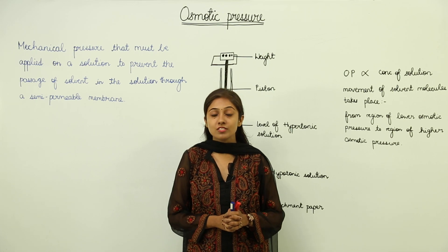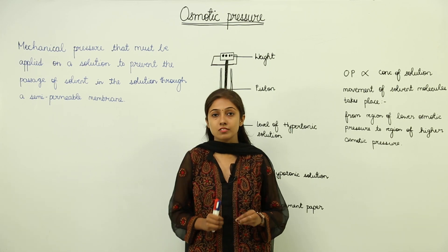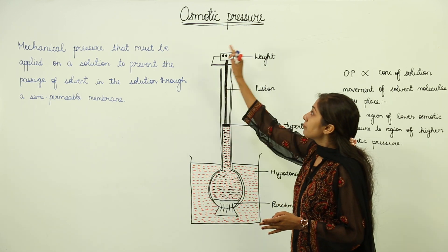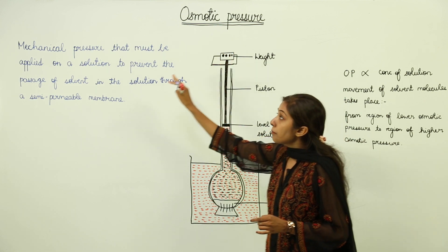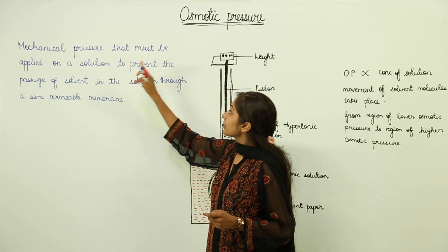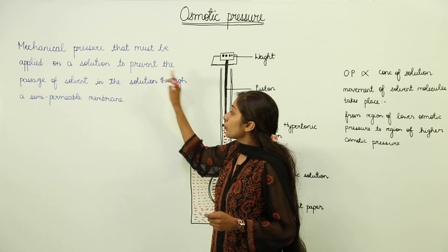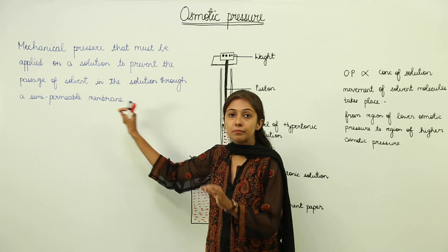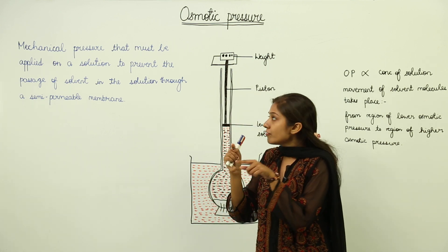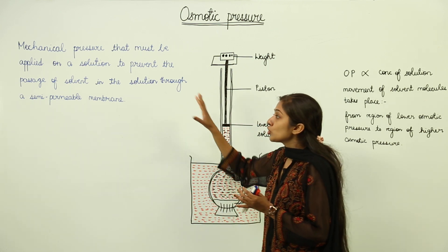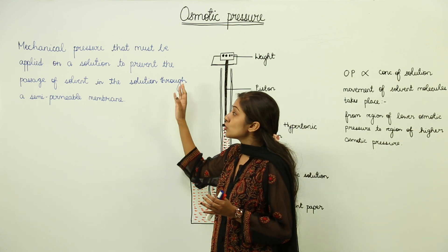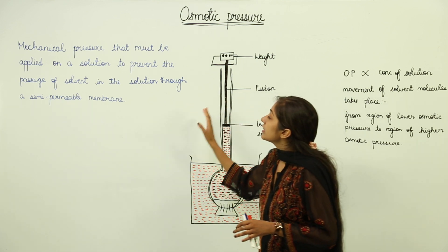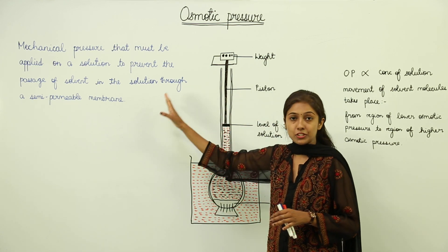After discussing the process of diffusion and osmosis, let's discuss osmotic pressure. Osmotic pressure is the mechanical pressure that must be applied on a solution to prevent the passage of solvent in the solution through a semi-permeable membrane. Means the pressure that we are going to apply on the solution so that there is no movement of solute particles. So, this is how you will define the osmotic pressure.